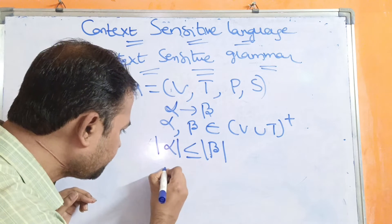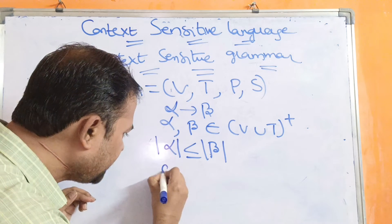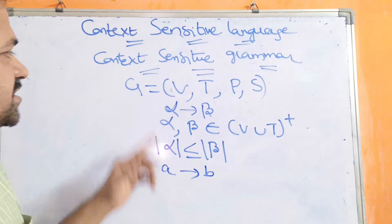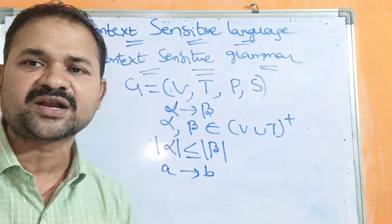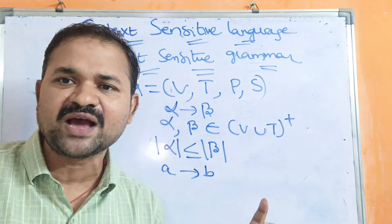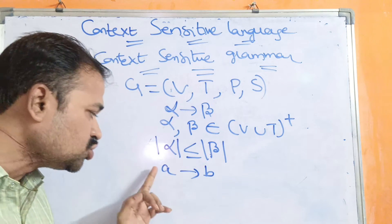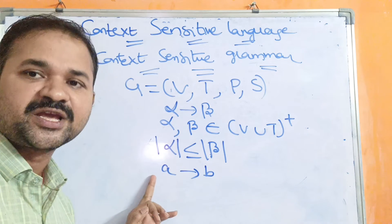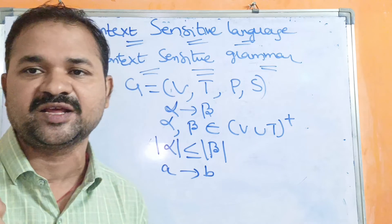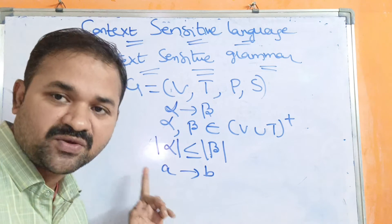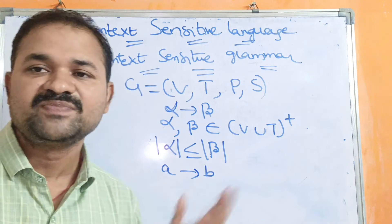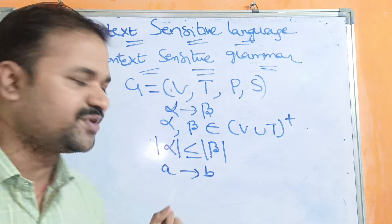Let us take some examples. Consider a production 'a implies B'. Is it a context sensitive grammar? No. Because context sensitive grammar means left hand side should contain minimum one non-terminal. Here we don't have any non-terminal. That's why this is not a context sensitive grammar.